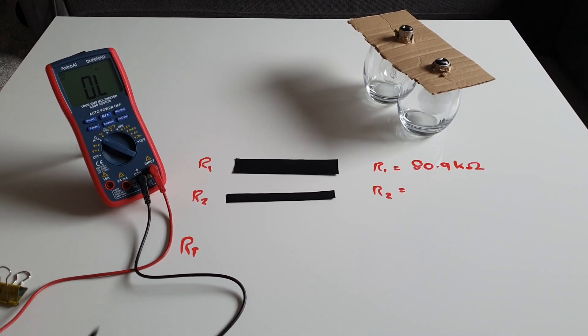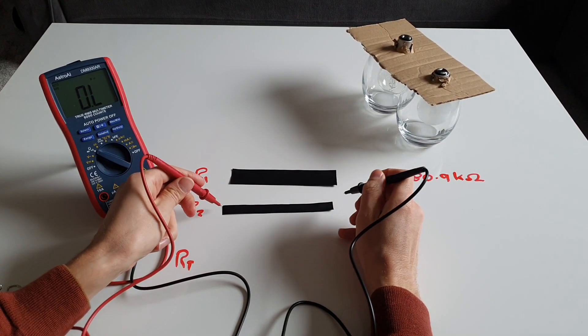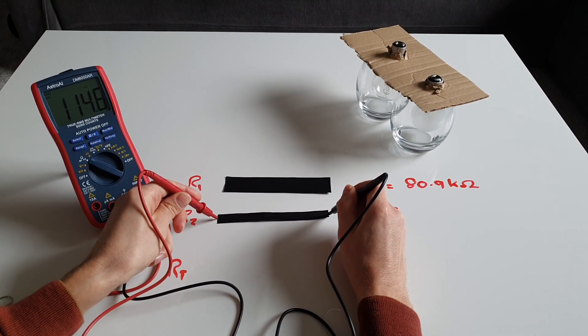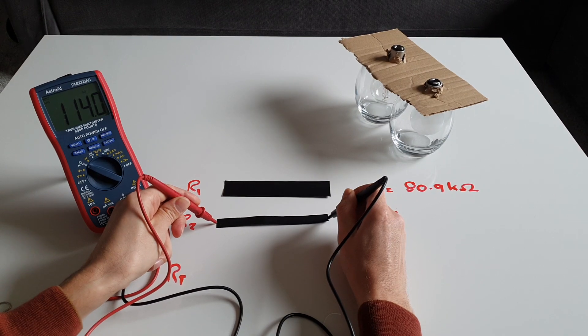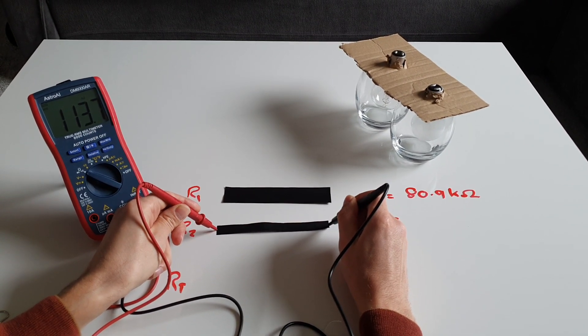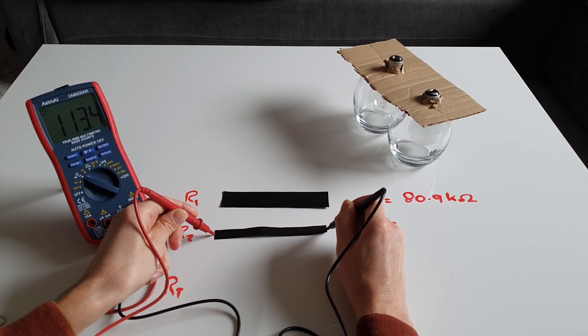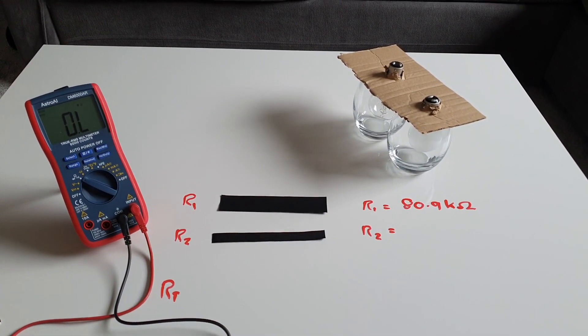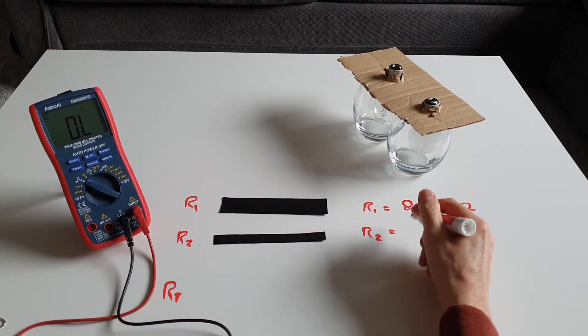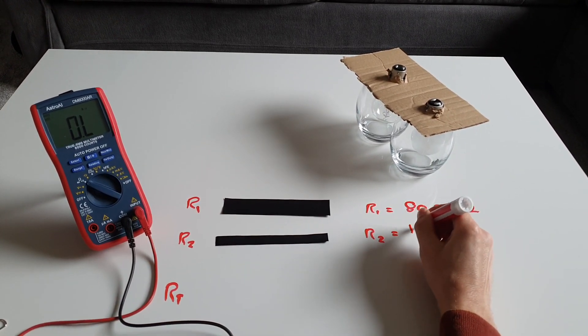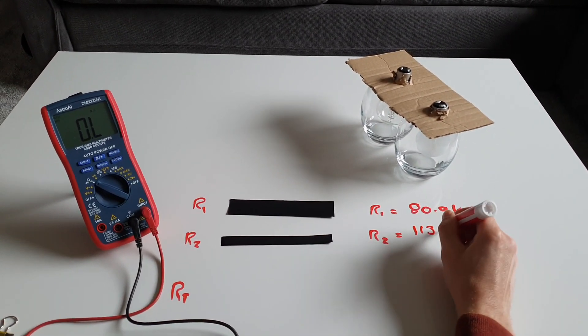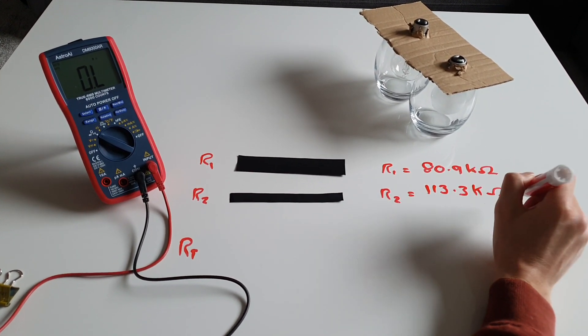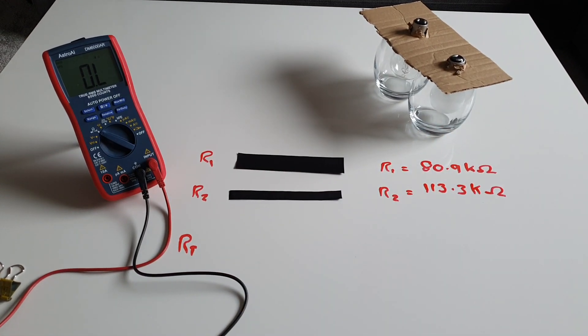Let's do R2 now. Leave it to settle a bit. So that's 113.3 kilo ohms. 113.3 kilo ohms. Okay. Now I know what you're all thinking. What happens if we join them together? What would the total resistance be?